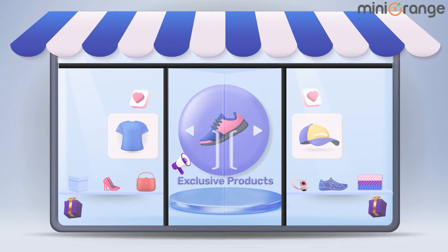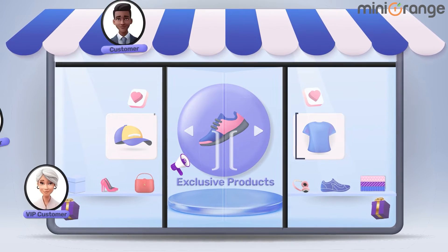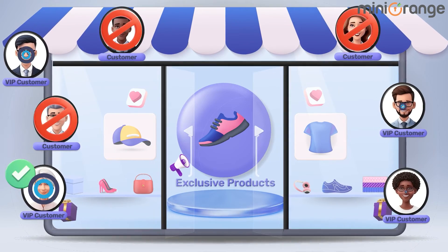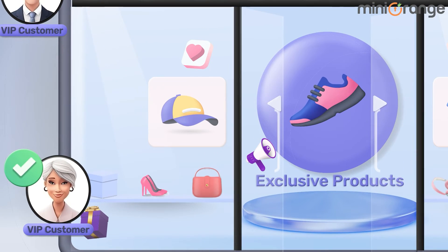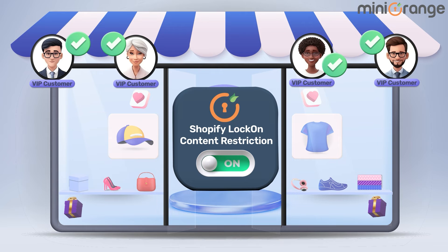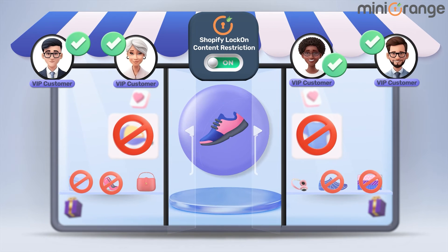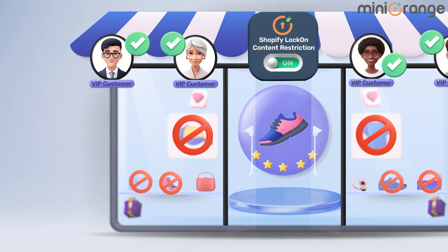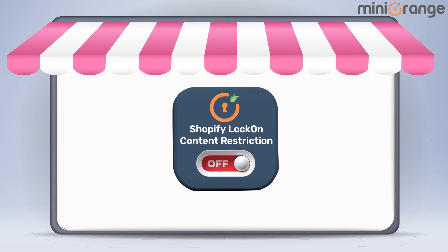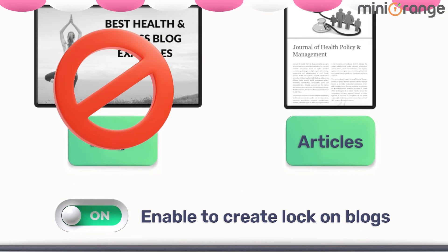Consider an example where you want to make certain products exclusive so that only your VIP customers can access those products. No problem! The Lock-On application allows you to restrict access to specific products, creating a sense of exclusivity that keeps your customers engaged. Lock-On also enables you to restrict blogs and articles, making sure your valuable content is seen by the right audience.